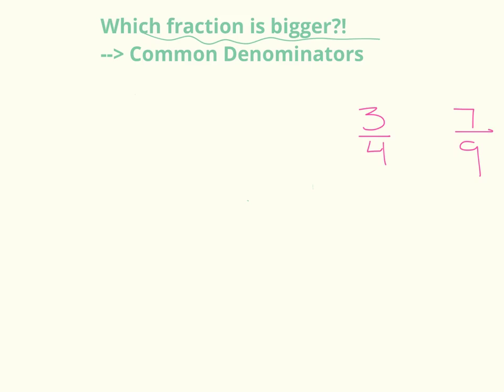For this last example, why don't you pause the video, try it on your own, and then come back and check your answer. All right, so let's see, four times nine, I got the common denominator of 36. And then I was able to multiply nine to get 27 over 36, and then multiply four over here, 28 over 36. So this fraction is less than this fraction, which makes seven-ninths the bigger fraction.